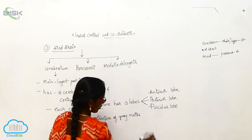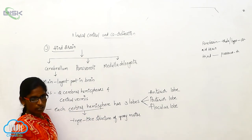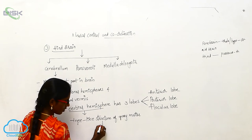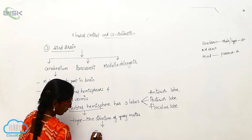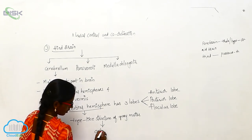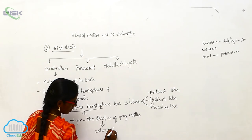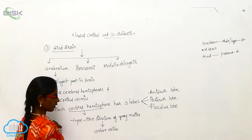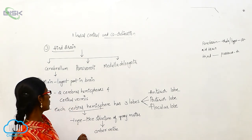This tree-like structure of grey matter is called the Arbor Vitae.